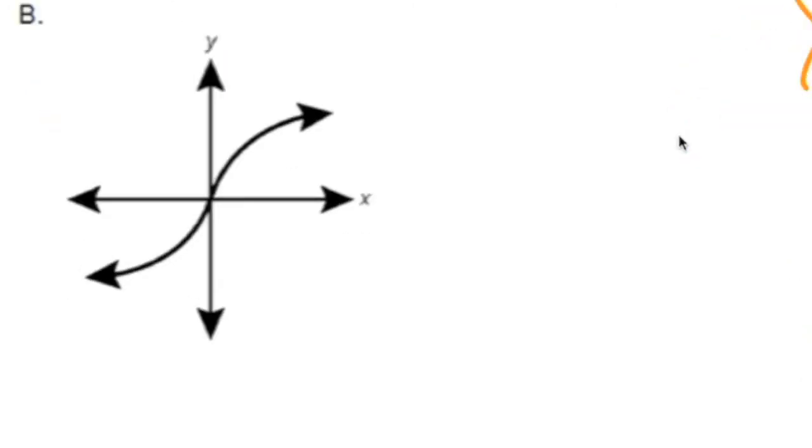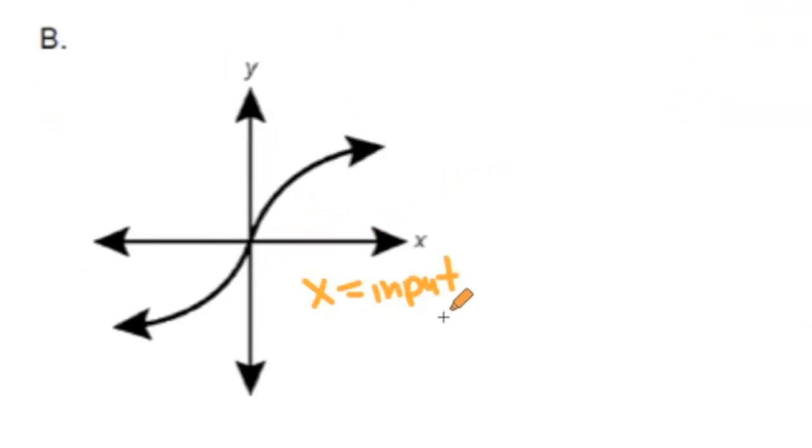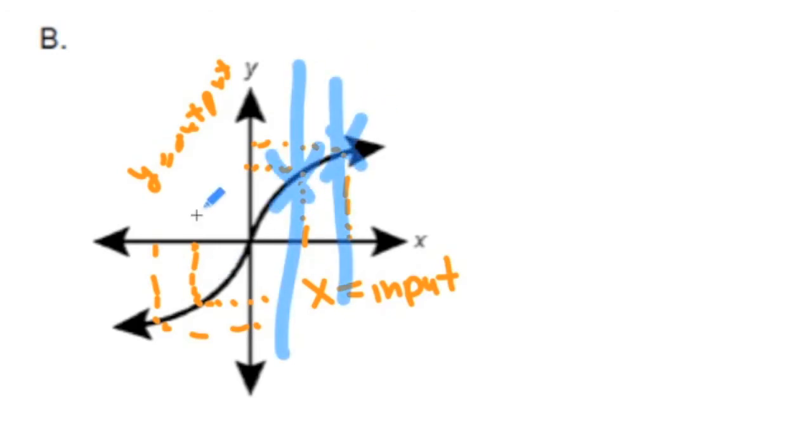Now, let's go to b. b matches up with the rule. For every input of x, it corresponds with one output of y. No matter what the input is, it only has one output. Even if it's a negative input, it only has one output. And if we drew the lines here, the vertical line rule, you would see that it's only intersecting one time for each one of these.